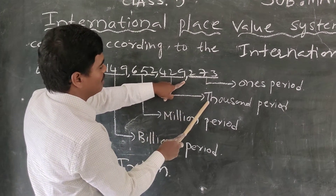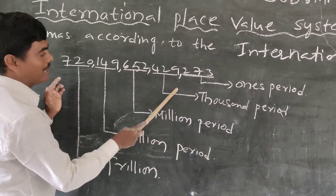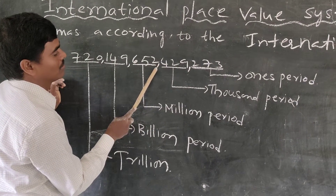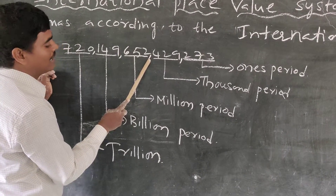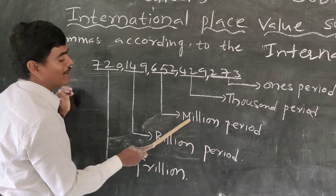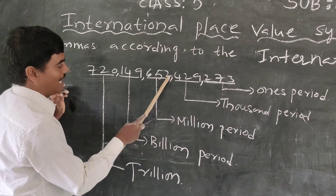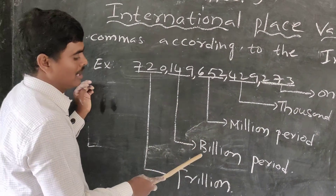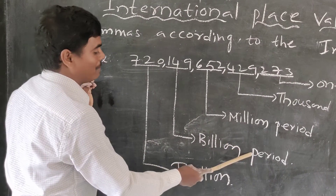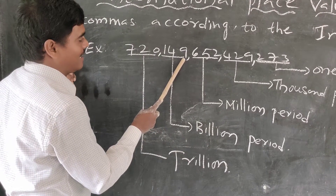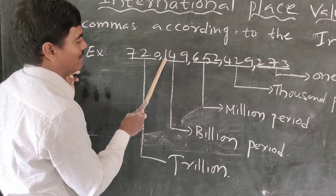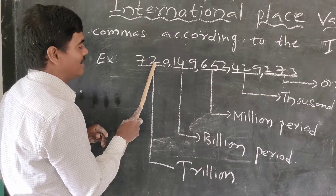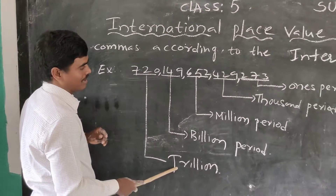Continuing with the comma placement: the third period is the millions period with three places — million, ten million, hundred million — then a comma. The fourth period is the billions period with three places — billion, ten billion, hundred billion — then a comma. Next is the trillions period: trillion, ten trillion, hundred trillion. Commas are placed after every three digits in the international place value system.